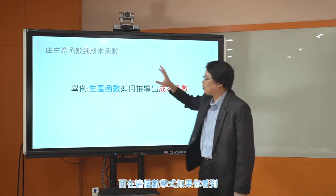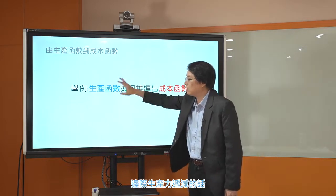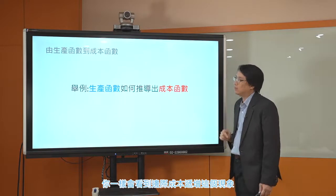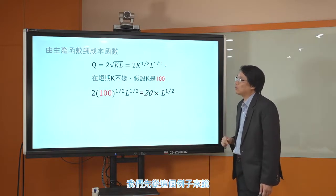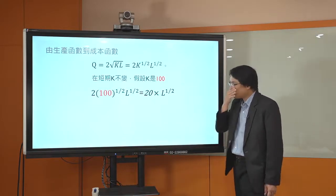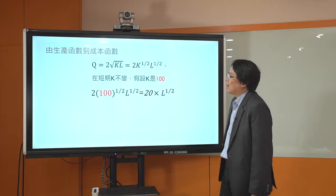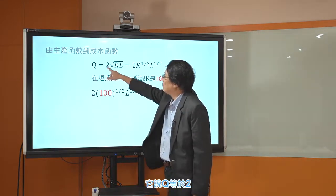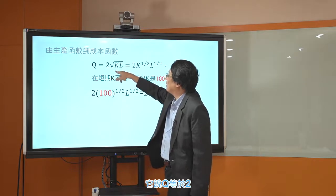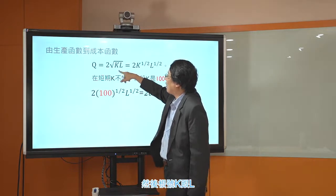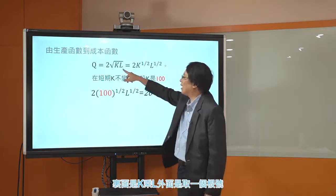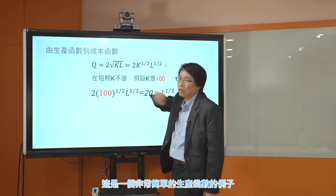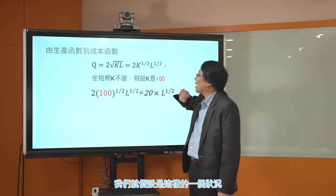我们来用一个数学式来算，如果你看到一个数学式在描述生产函数的样子的时候，怎么样从这个数学式推导出成本函数。如果你看到边际生产力递减，在成本函数上你一样会看到边际成本递增。这个例子非常的简单：它说Q等于2乘以根号KL，也就是Q等于2乘上K的二分之一次方再乘上L的二分之一次方。